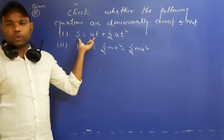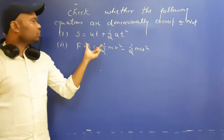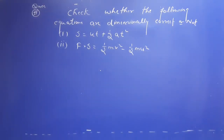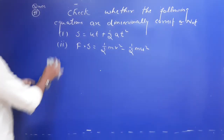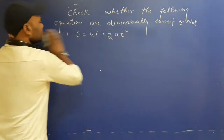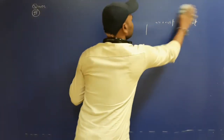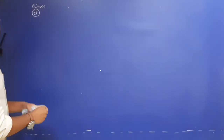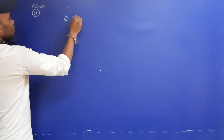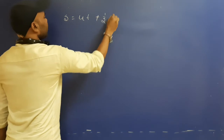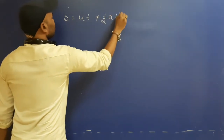Through the first equation, S equals ut plus half at squared. Now, what will we do? S is equal to ut plus half at squared.